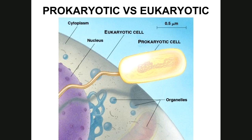This slide shows the size difference between prokaryotic and eukaryotic cells. Prokaryotic cells are roughly like the size of a BB compared to a basketball for a eukaryotic cell — prokaryotes are very small. You can see one here with DNA floating free in the cytoplasm, and another with a flagellum, which is a long whip-like structure allowing it to swim.